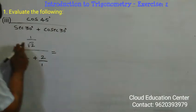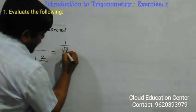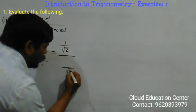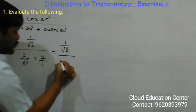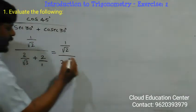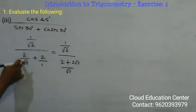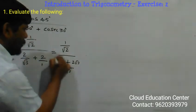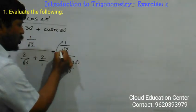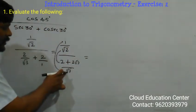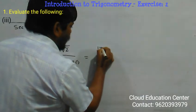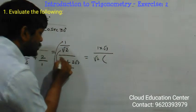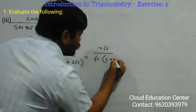Now this 1 by root 2 is as it is, and you see that root 3 into 1 is root 3, 1 by 2 is 2, plus root 3 into 2 is 2 root 3. Just cross-multiply this, take the reciprocal — the denominator goes to numerator. So root 3 goes to numerator: that is 1 into root 3, divided by root 2 into 2 plus 2 root 3.